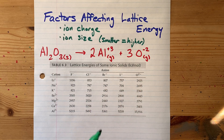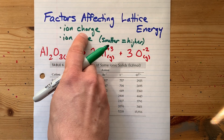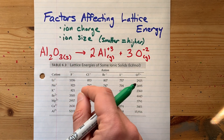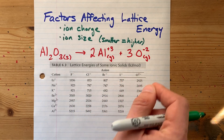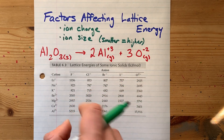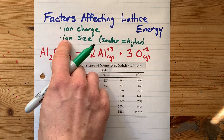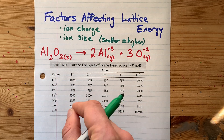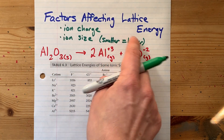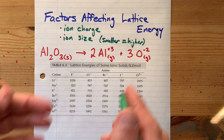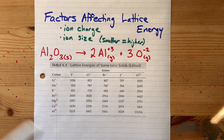In any case, compare the ion charges — bigger charges lead you to a higher lattice energy. Then, if there's a tie, you can compare ion sizes. Smaller ions will generally give higher lattice energies. Thanks for being with me, and best of luck.